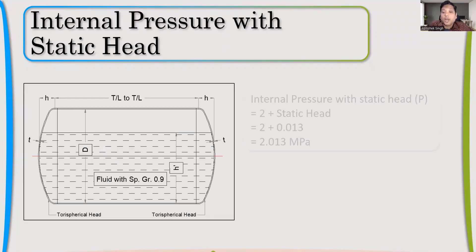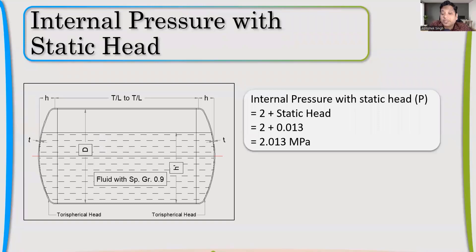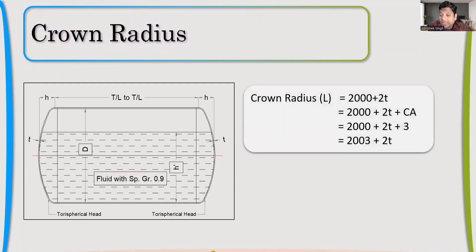Now I'll add this static head to the internal pressure, so my total pressure is 2.013. Now, crown radius I'll calculate, which is nothing but ID plus 2 times T. Because it's inside, the crown radius is on the inside, so I need to add the corrosion allowance also. So it will become 2003 plus 2T.